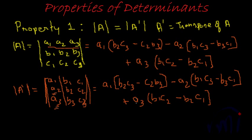Now, you see these two are equal. Hence, it is proven that the determinant of A will be same as the determinant of transpose of A. This is the first property.